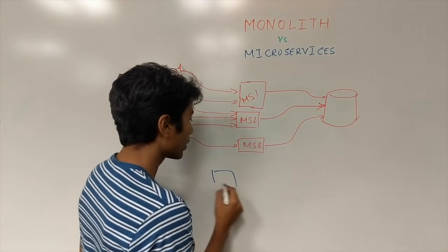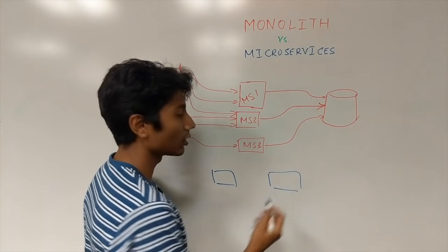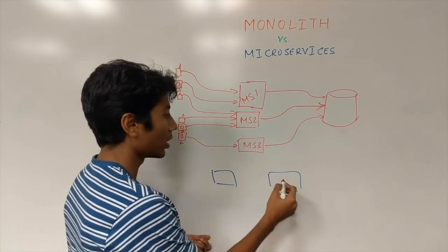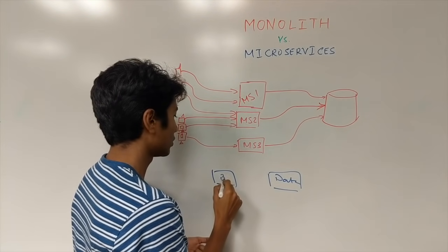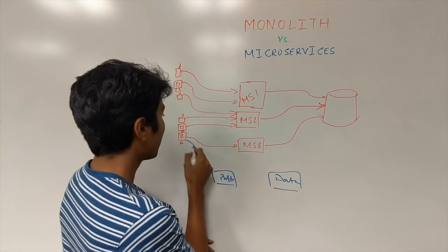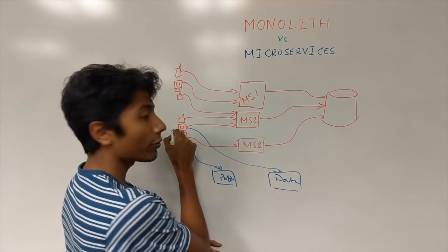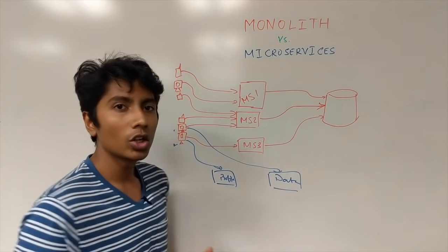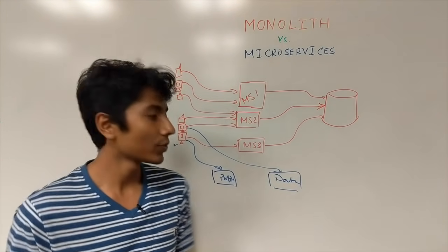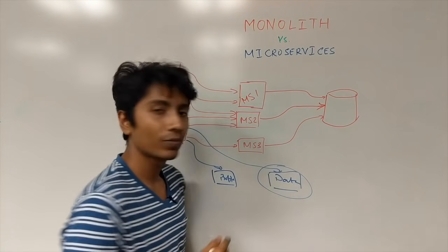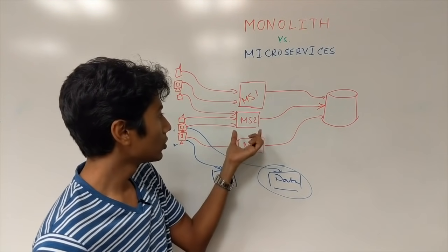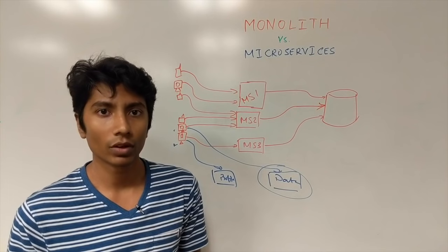Instead, if you had something which was just serving profiles and something which is serving let's say some other data, maybe this could have connected to the profiles and this could have connected to data. This would have failed, this would have succeeded. You would have partial success in the system and you would just need to restart this point instead you needed to restart all of them with the correct code.